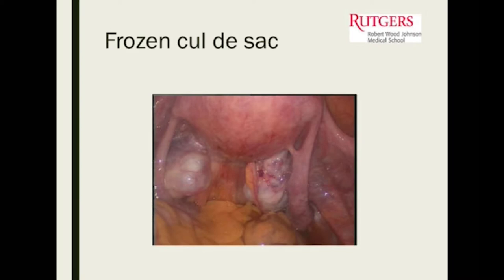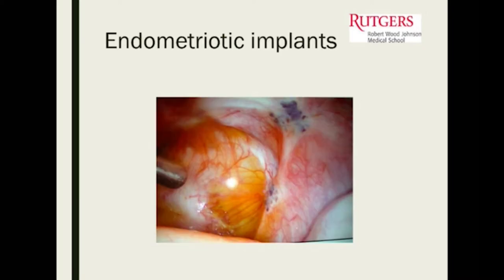Sometimes the lesions are actually redder when we see endometriotic lesions in the adolescent patient. These are what the endometriotic implants look like — dark lesions — and we usually have to biopsy them for pathology to confirm. But in the adolescent patient, it may not appear like classic adult endometriosis.